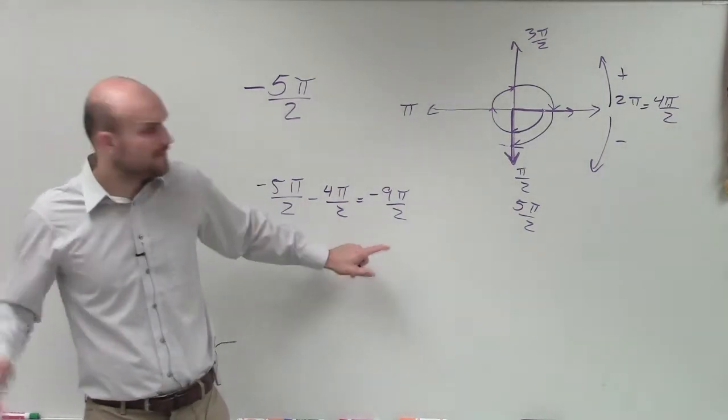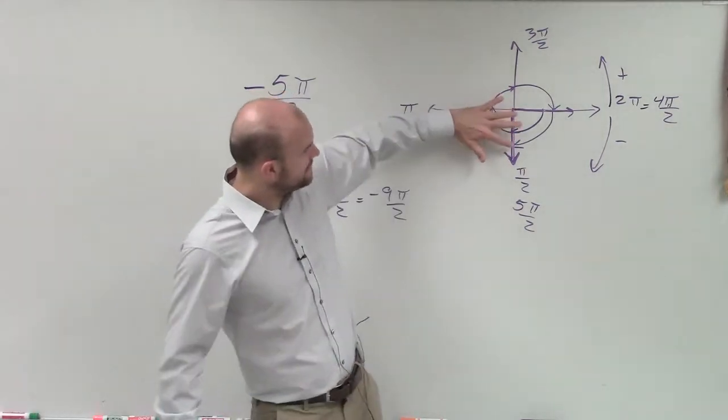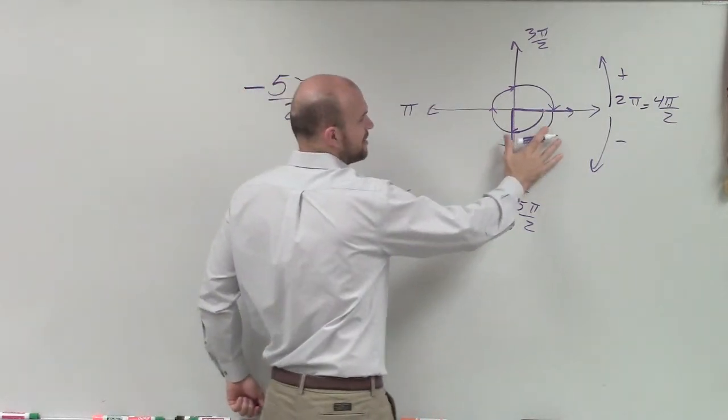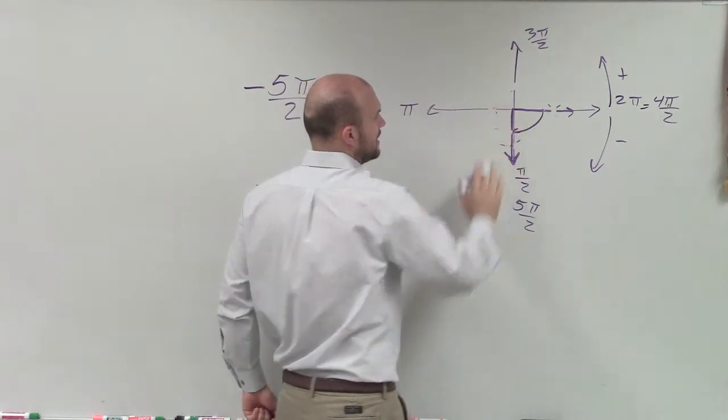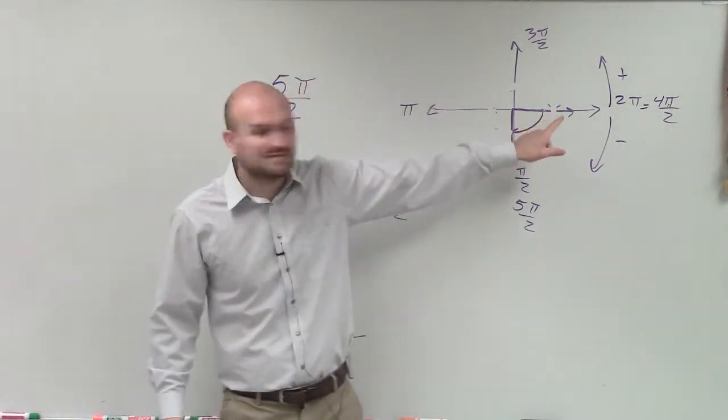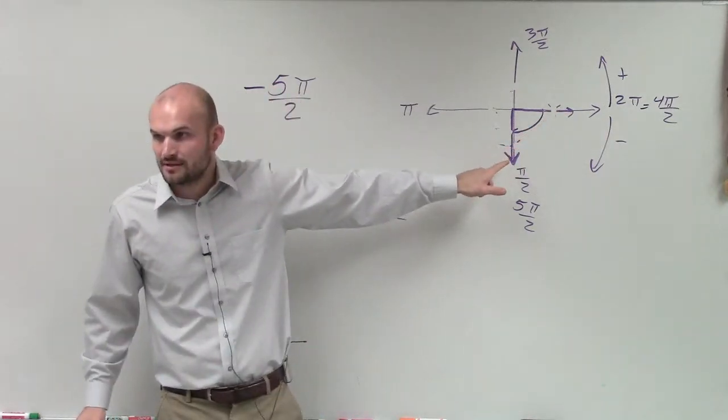Well let's look at it. What happens if I, instead of taking negative 2π over 2, what about if I added 2π? Then I would just have that angle right there. And do you see, does that still have the same initial and terminal side? Yes.